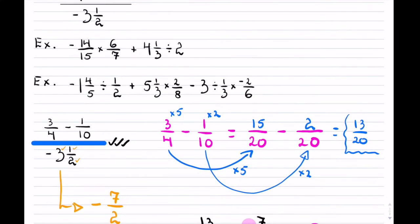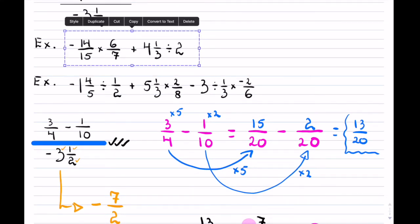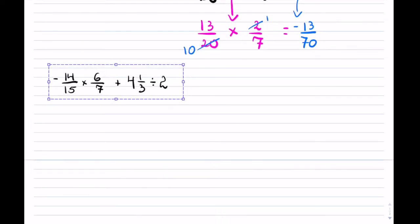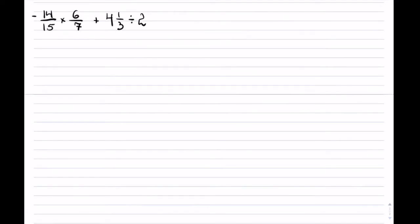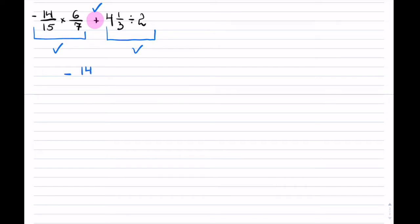Let's take a look at the second example — this one is a little bit longer. In this expression, I notice that I have an addition between two computations. These are terms, and just like in any order of operations, I will first solve these terms before trying to do any addition between them. So let's look at the first term: I have negative 14 over 15 multiplied by 6 over 7.